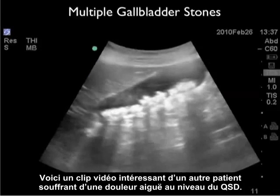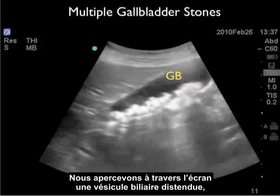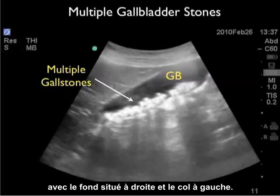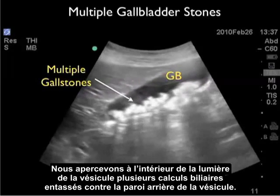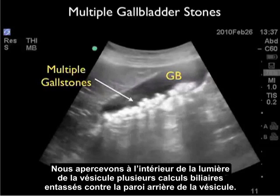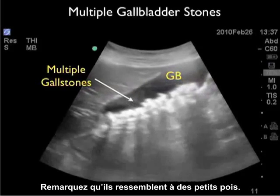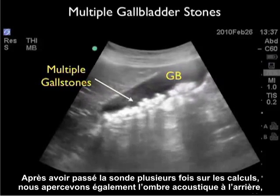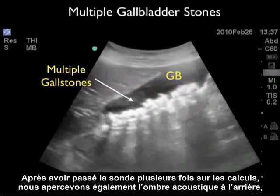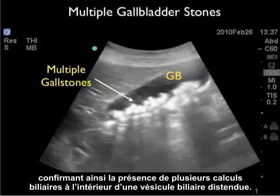Here's an interesting video clip from another patient with acute right upper quadrant pain. We see a distended gallbladder stretching across the screen, with the fundus located towards the right and the neck towards the left. Within the lumen of the gallbladder, we see multiple gallstones layering across the back wall with almost a small pea-like appearance. We can see the posterior acoustic shadowing as we scan back and forth — multiple gallstones within a distended gallbladder.